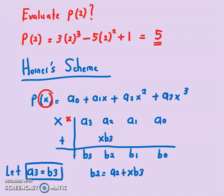So my b₂ is now a₂ + xb₃. Now b₂ times with this x will give me xb₂. Now to find b₁, I hope you're getting it.